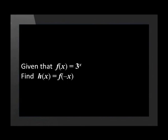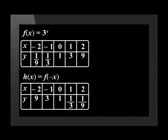What if we were to reflect the original function over the y-axis or the line x equals 0? Find h of x is equal to f of negative x. From this equation, we see that x is negative. Therefore, we change all the signs of the x-axis. Our table of coordinates reads...